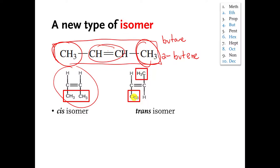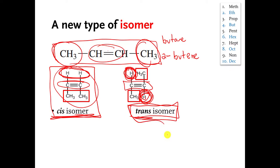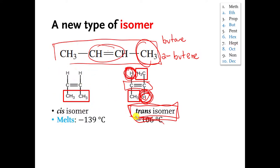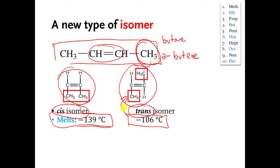They have the same simple formula, but the atoms are attached in different ways. This is a special kind of isomer. When the hydrogens come off of the carbon-carbon double bond and point in the same direction, you say this is the cis isomer. When the hydrogens come off of the carbon-carbon double bond and point in opposite directions, you say that this is the trans isomer. Trans means 'across from,' so the Hs are across from each other — that's the trans isomer. These two molecules have completely different behaviors: this one melts at negative 139 degrees Celsius, and this one melts at a completely different temperature. They are different things. Cis and trans isomers are real.